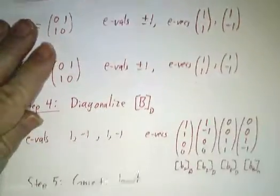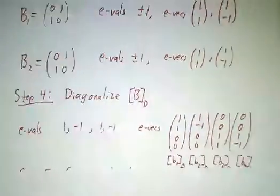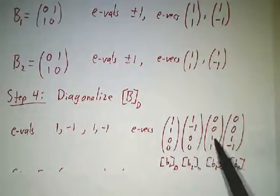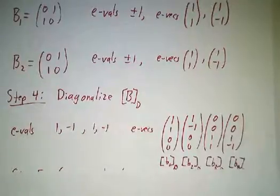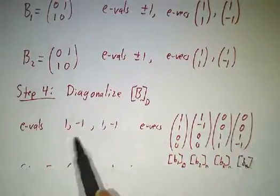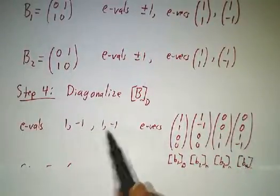So here we go. We take the first two eigenvectors, pad them with zeros. Second two eigenvectors, pad them at the top with zeros. So now we've got our four eigenvectors of B in the D basis with eigenvalues 1 and minus 1 and 1 and minus 1.